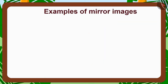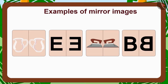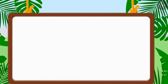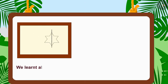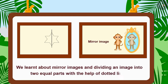Here are some examples of mirror images. Now try to see different objects in the mirror and enjoy learning more about them. In this video, we learnt about mirror images and dividing images into two equal parts with the help of dotted lines.